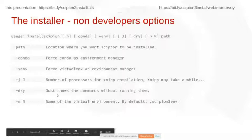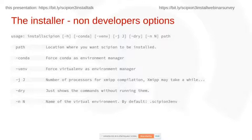The other option is -n, which is optional — it's the name you want to give to the virtual environment that CPN is going to create. By default it's dot-cpn3env, and if you want another name you can pass -n followed by a text value.